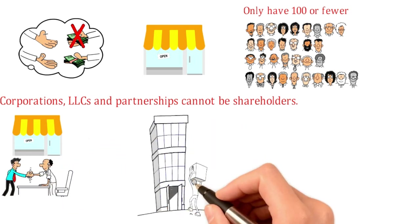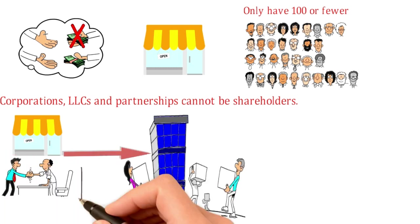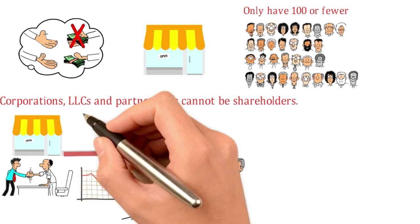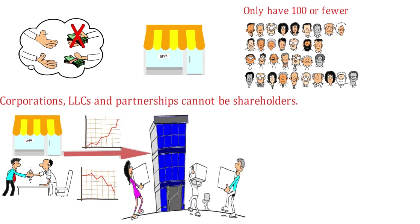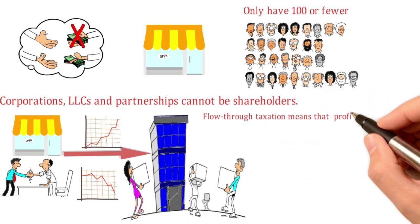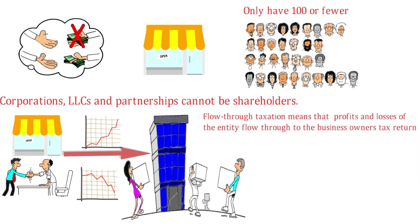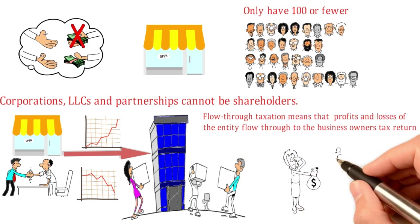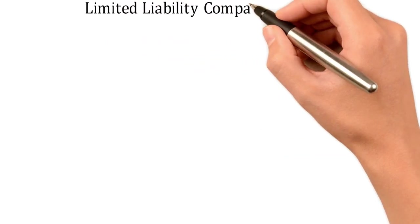You can consider starting with an S corporation and convert to a C corporation at a later date after you have taken advantage of the flowing-through losses. Flow-through taxation means that profits and losses of the entity flow through to the business owner's tax return and are dealt with at an individual level.